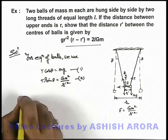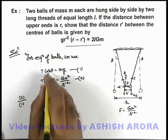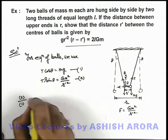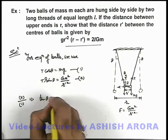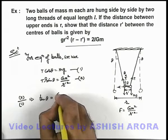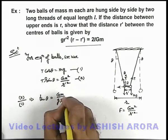We can divide the two equations like 2 by 1. So here T gets cancelled out, this implies we are getting tan theta is equal to G m by g r'².